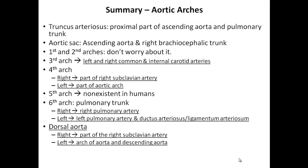A quick summary: the truncus arteriosus will form part of the proximal ascending aorta as well as the pulmonary trunk. The aortic sac will become part of the ascending aorta and part of the right brachiocephalic trunk. There will be six aortic arches altogether, though with a slight modification.